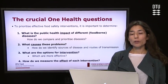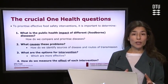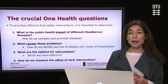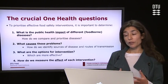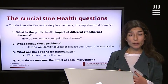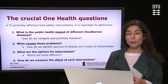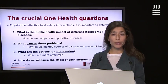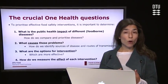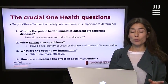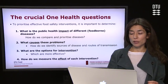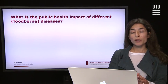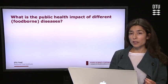Coming back to our crucial One Health questions that we need to answer to prioritize our interventions to improve food safety, we have to start by estimating the public health impact of different foodborne diseases so we can compare these diseases according to their importance. We then want to know what is causing this burden, which foods are contributing to disease in the population, what are our options for interventions to reduce the burden, and how to measure the effect of these interventions. I will be focusing on the first question: how do we estimate the public health impact of different foodborne diseases?